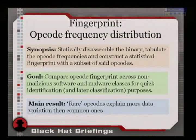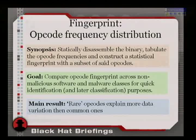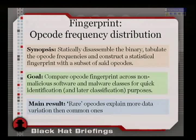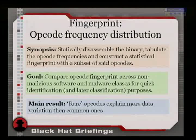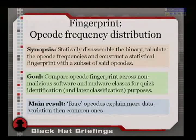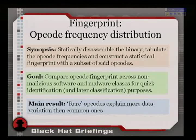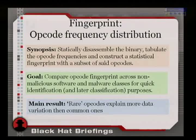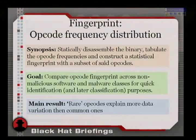This is the one-slide synopsis of the fingerprint analysis. You tally up the opcodes of the specimen, build a statistical profile, and start comparing them to what I call goodware — because 'non-malicious software' was too long to fit on the slide — good software against bad software, to see whether you can find any discrepancies. Statistics are a nice vehicle because they're relatively robust under permutations.